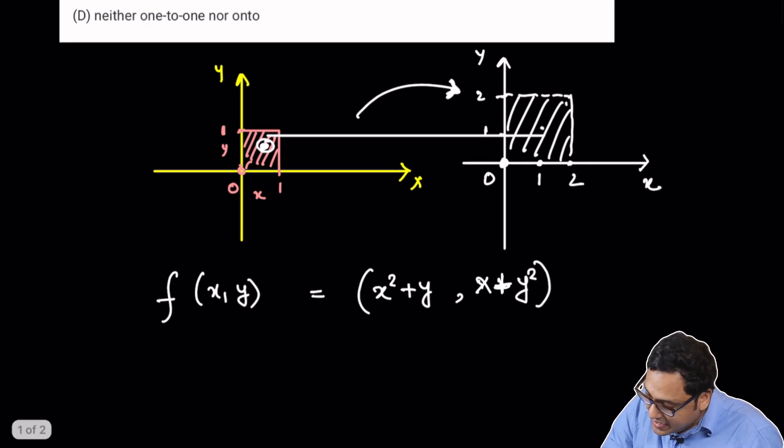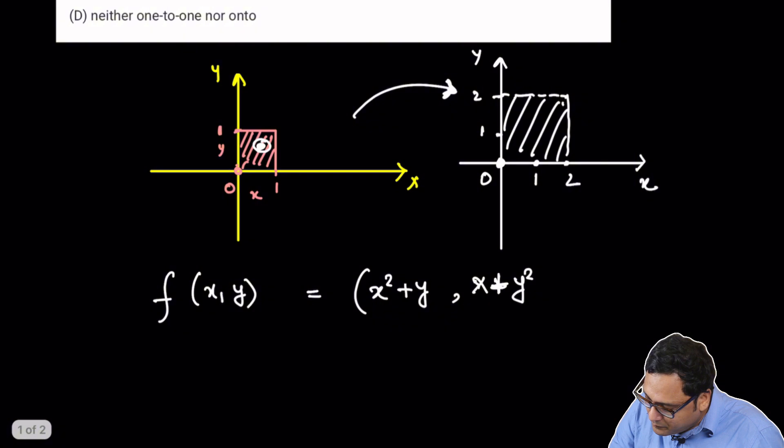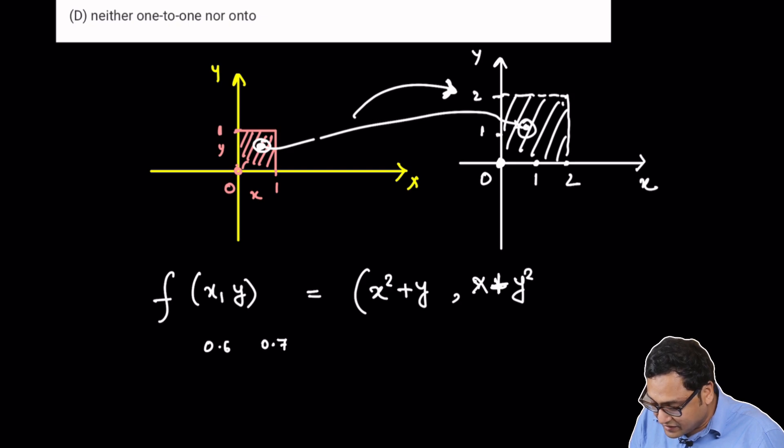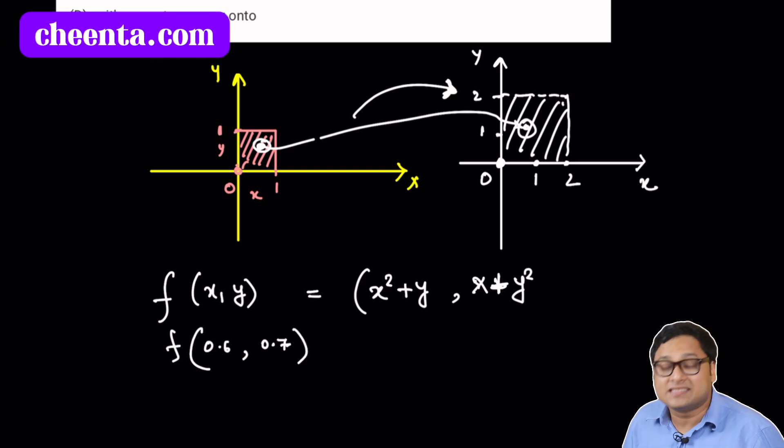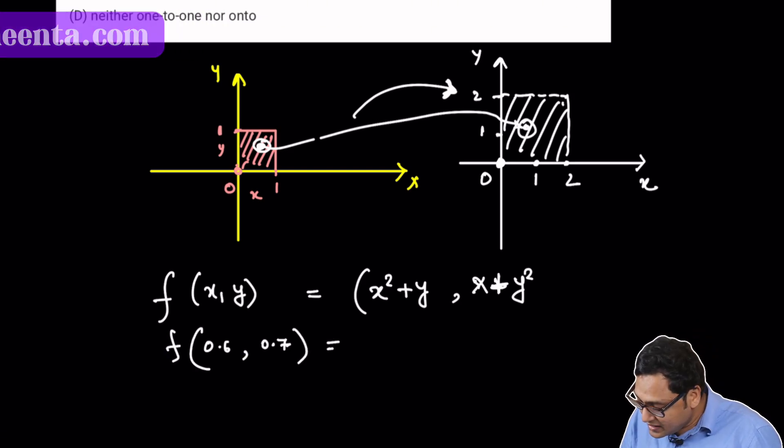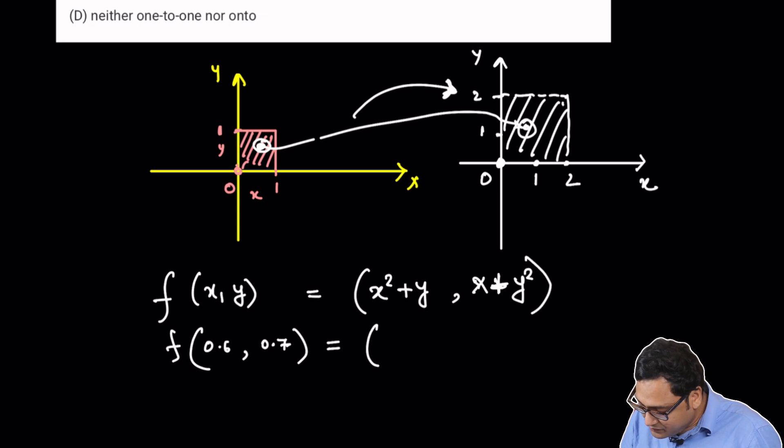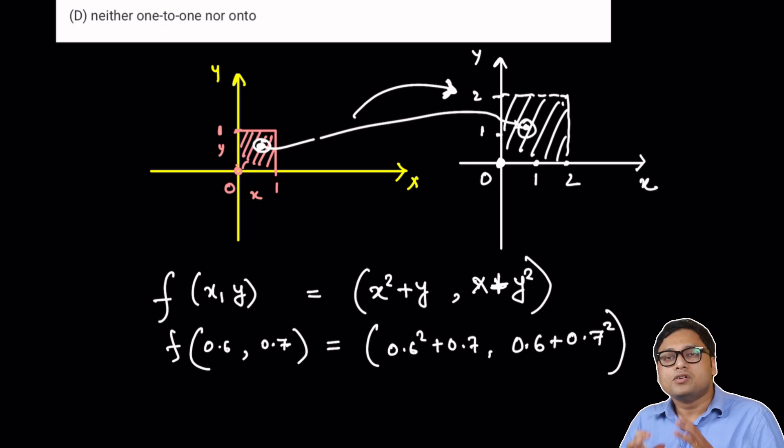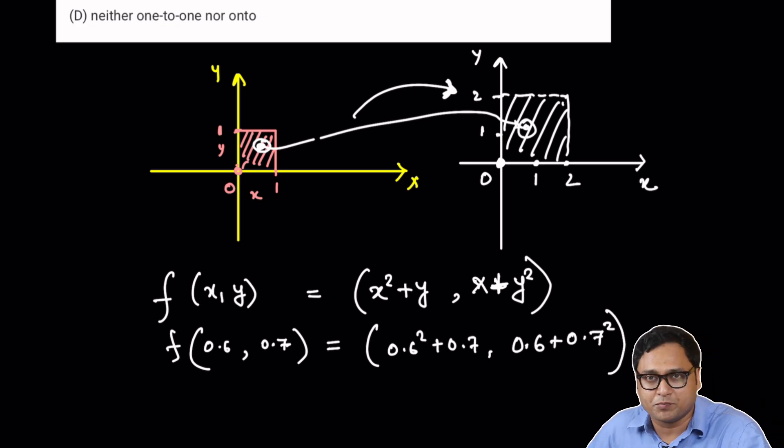So you can use some examples to understand what's going on. For example, what if x is 0.6 and y is 0.7? If I take these two as the input coordinates, the output coordinates will be 0.6 squared plus 0.7 and comma 0.6 plus 0.7 squared. So you can calculate this and get the output point.